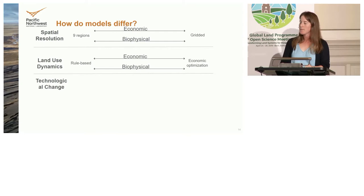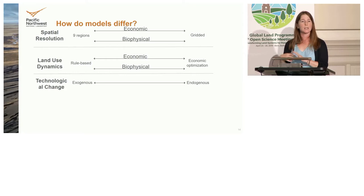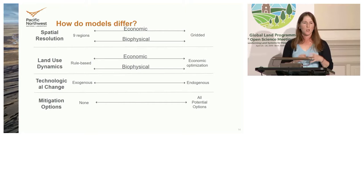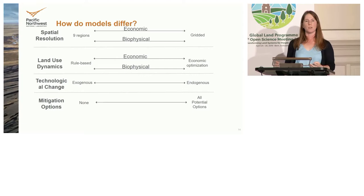There's also variation in technological change — how fast yields will grow — ranging from exogenous assumptions imposed by modelers to endogenous processes that dynamically change depending on what else is happening in the model. On mitigation options, all models tend to include afforestation, reforestation, and bioenergy, but they vary from having no way to mitigate on land to implementing the full spectrum of land-based climate mitigation strategies.